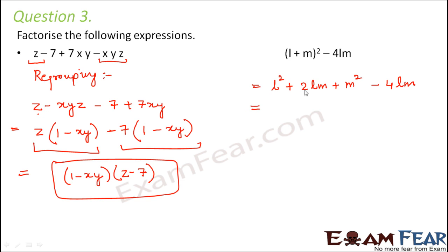Now here if you see, this term and this term have different coefficients but the same algebraic part. Therefore we can directly add them. So we can write it as l² + m² - 2lm.